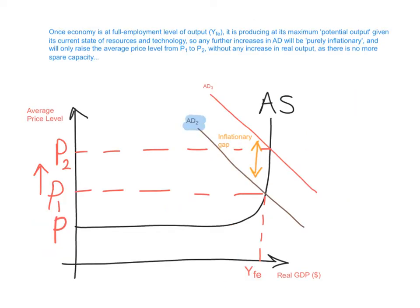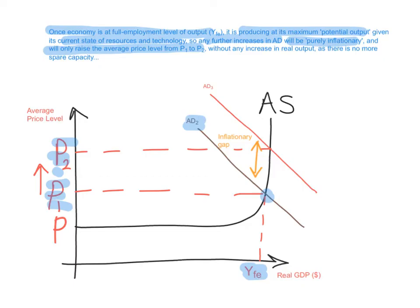What if aggregate demand is at a level where it is intersecting aggregate supply at the full employment level of output YFE? Once the economy is at the full employment level of output, producing at its maximum potential output given its current state of resources and technology, any further increases in AD will be purely inflationary and will only raise the average price level from P1 to P2 without any increase in real output — because there is no more spare capacity. Any shift in aggregate demand from AD1 to AD3 will only raise the price level, but output will not change because the economy has already reached its full employment level on the vertical section of the Keynesian aggregate supply curve. The difference between both supply curves is the inflationary gap.